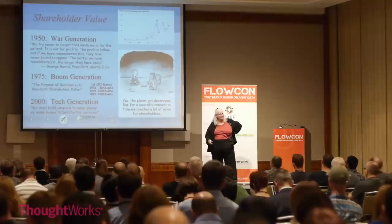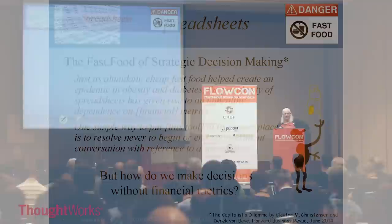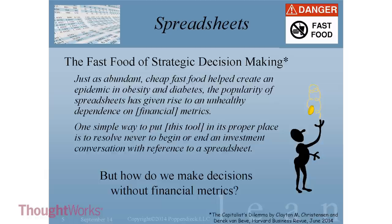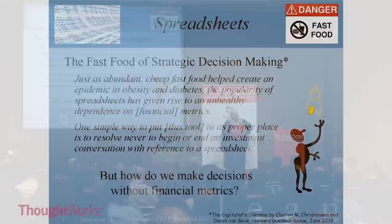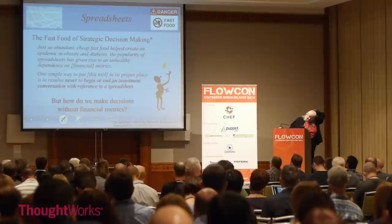Clayton Christensen says in his article that spreadsheets are one of the really big problems — he calls them the fast food of strategic decision-making. Just as abundant cheap fast food helped create an epidemic of obesity and diabetes, the popularity of spreadsheets has given rise to an unhealthy dependence on financial metrics, especially ratios dealing with capital investment. One simple way to put this tool in its place is to not begin or end an investment conversation with reference to a spreadsheet. If we're not going to do that, how on earth are we going to make decisions? Financial metrics don't stop helping to inform how we think about things, but they're a second-order effect.